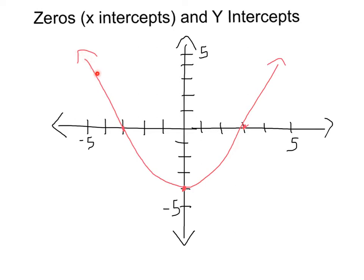X-intercepts are zeros—that's where the function crosses the x-axis. We see this function crossing the x-axis at the point (-3, 0), so that's one of our x-intercepts, and we've got it crossing the x-axis over here at (3, 0). That's the second x-intercept.